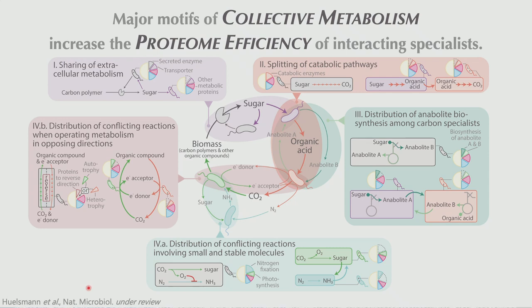Maybe I should say from the knowledge I had eight months ago when this was finished and sent out to journals — I've already learned some things in the last couple of days where some of the nuances need to be updated. But basically we identified or classified five general motifs of collective metabolism. In all of these motifs, cells specialize to become more proteome efficient, but then they require or facilitate a metabolic interaction.